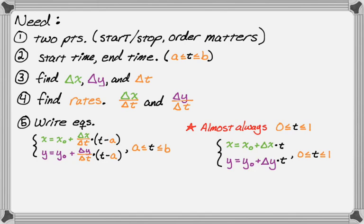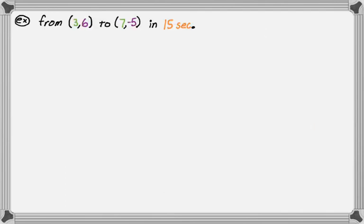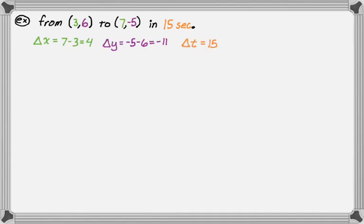We're going to do two examples of the less simple version, since that's what you should always practice. So we want to go from the point (3, 6) to the point (7, -5), and we want it to take 15 seconds. I'll calculate the three deltas: delta x is 7 minus 3, which is 4. Delta y is -5 minus 6, which is -11. And delta t, since it takes 15 seconds, is just 15. Since the problem doesn't specify a start time, I'll assume t starts at zero and goes to 15.